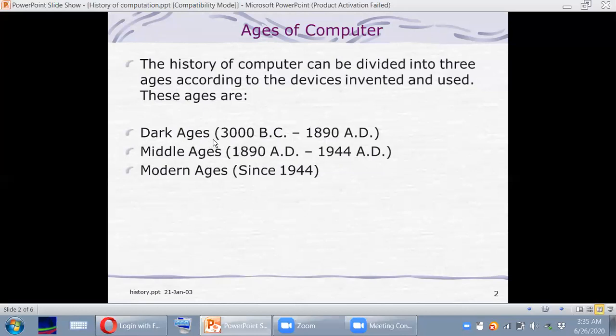The first stage is called the dark ages. Dark ages mainly consists of those devices which are manually operated - devices which are powered by or operated by human force. Then we will discuss middle ages devices, which mainly consist of mechanical devices. Then we have modern ages devices, which mainly consist of electronic devices. We will later see the meanings of these terms mechanical, manual, and electronic.